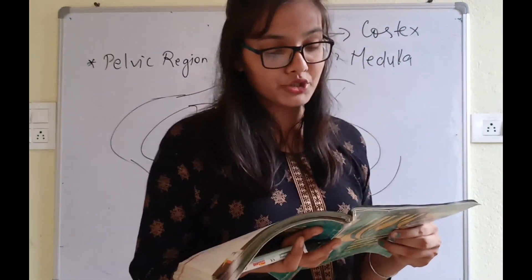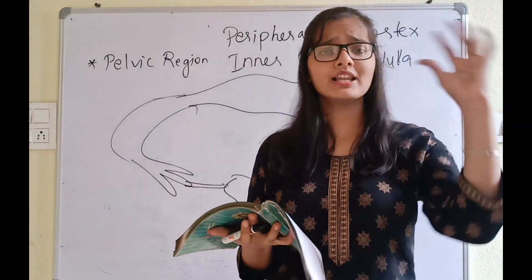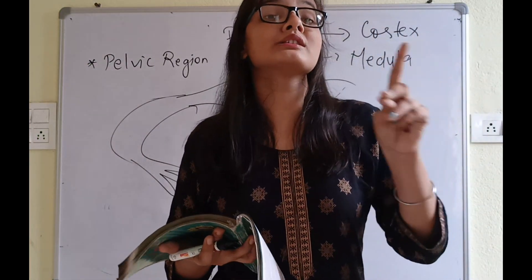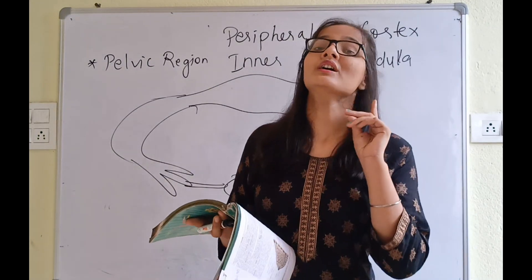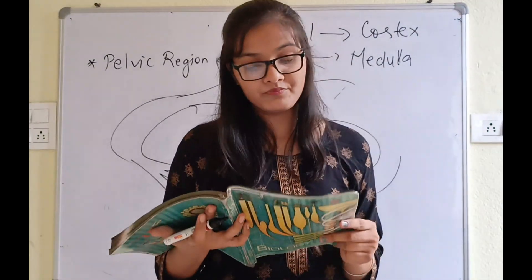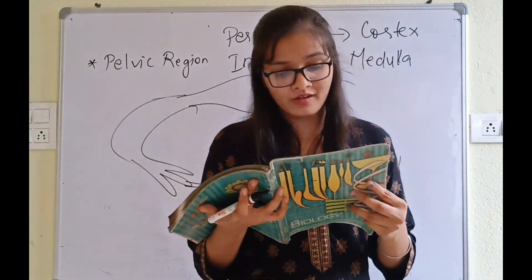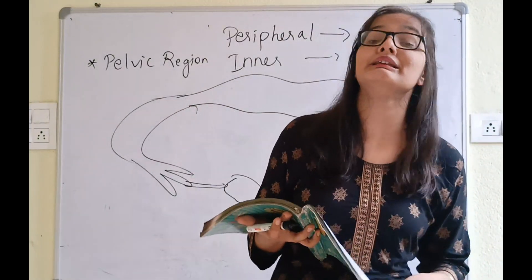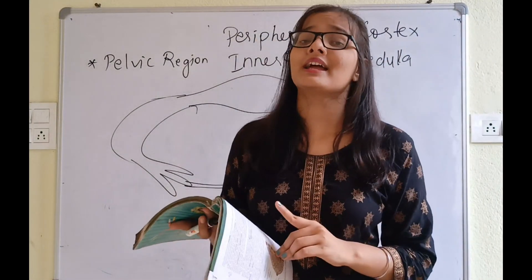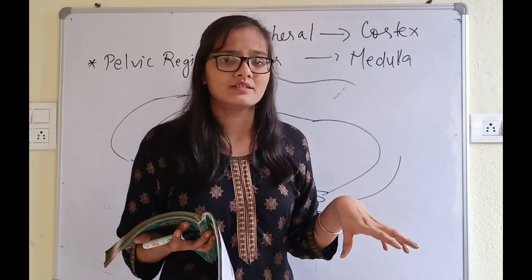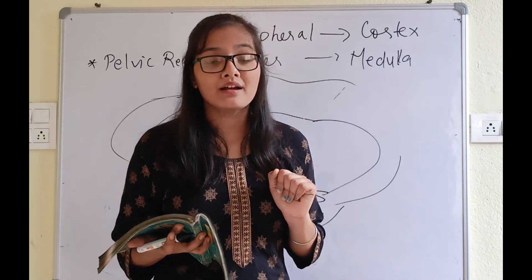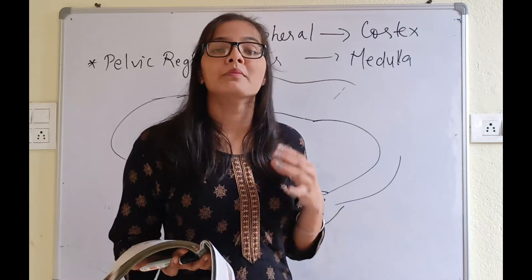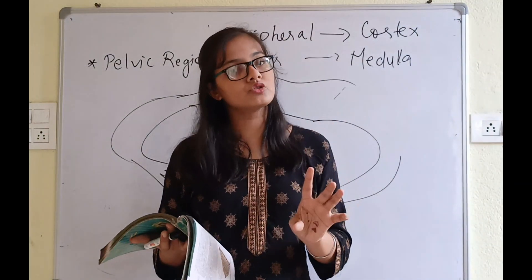The wall of the uterus has three layers of tissue: the external thin membranous perimetrium, the middle thick myometrium, and the inner endometrium. The myometrium undergoes strong contractions during delivery of the baby. The endometrium undergoes cyclical changes during the menstrual cycle. When periods come, there are a lot of changes - that is the menstrual cycle topic, which we will cover separately.